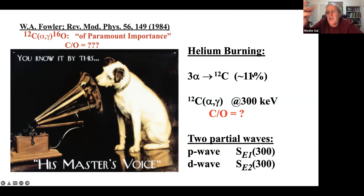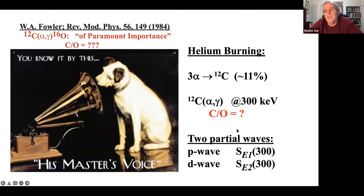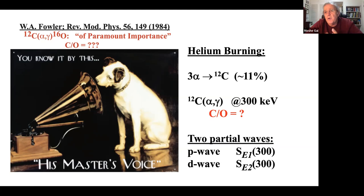We need to know the C12(α,γ) cross section at 300 keV; we measure at 1 MeV and must extrapolate. The cross section is dominated by two partial waves: P-wave (E1) and D-wave (E2), giving spectroscopic amplitudes SE1 and SE2. From now on we'll focus on SE1. This is the astrophysical S-factor separated into two partial waves.